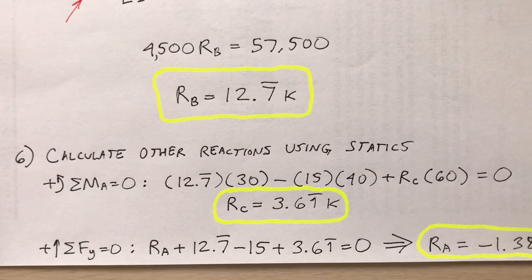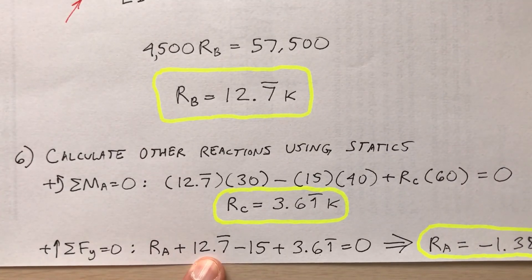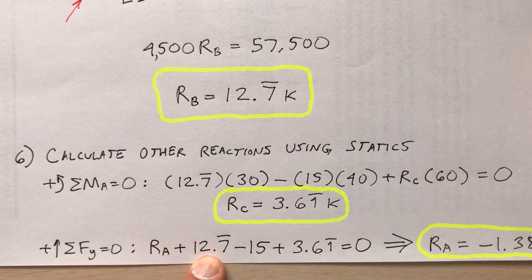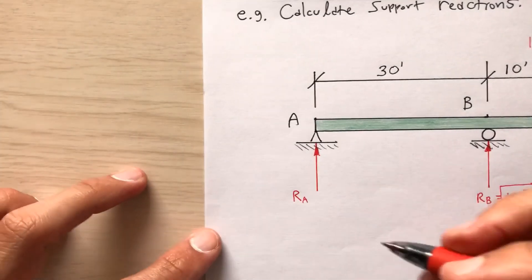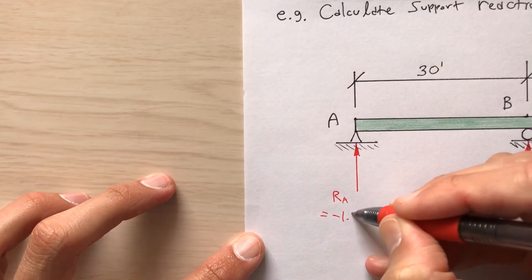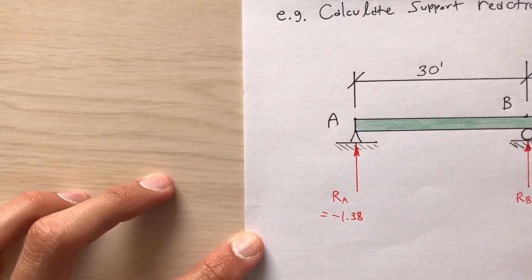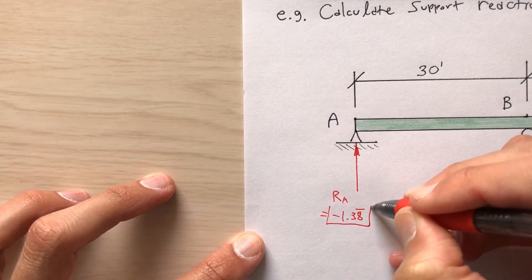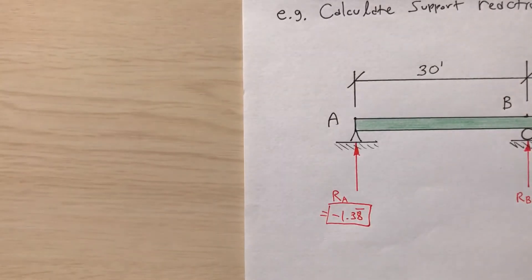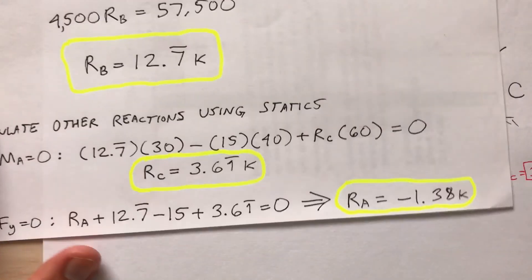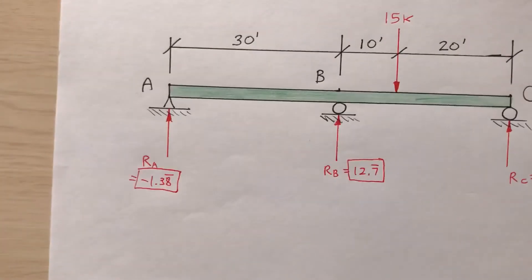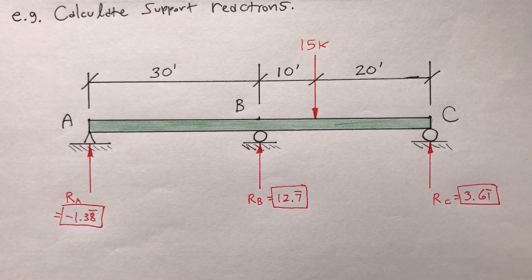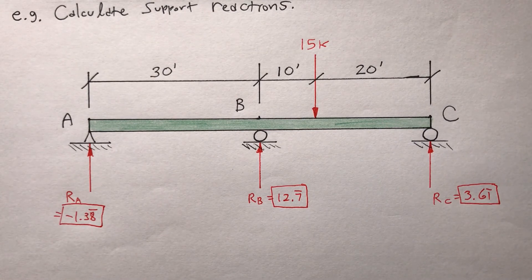Then equilibrium in the Y direction: R sub A plus 12.7 (R sub B), minus the 15-kip load, plus R sub C (3.61) equals zero. Solving, R sub A equals negative 1.38 kips (the 8 repeats). So I have found all three support reactions for this beam using the flexibility method.